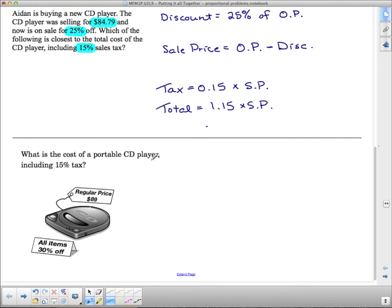Next one here, it says, what is the cost of a portable CD player including 15% tax? So this is kind of the same as the one before it. We've got $89. We're going to take 30% off the item. So here's our information. $89. We're taking 30% off. And then we're adding on the 15% tax. So this isn't a whole lot different than this one. It's just that now the CD player is in a picture and you have to take your information from the picture rather than from the words on the page.